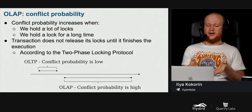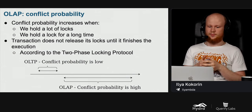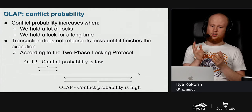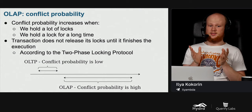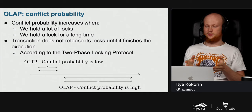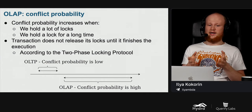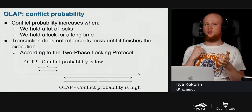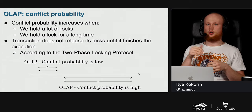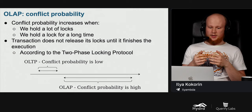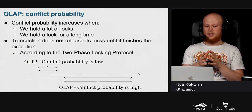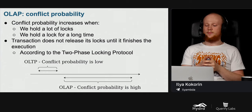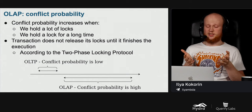One might say we have the same problems when running only OLTP transactions. That is true, but when we add OLAP queries, the probability of such situations dramatically increases. OLAP queries acquire a lot of locks because they read a lot of rows, and they hold those locks for a long time because they can take tens of seconds or minutes to execute. So OLAP queries dramatically increase the probability of a conflict in our system.